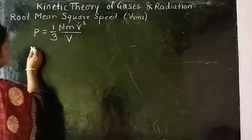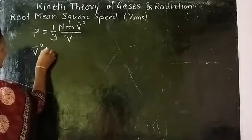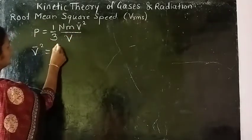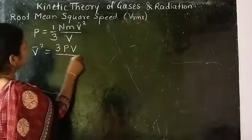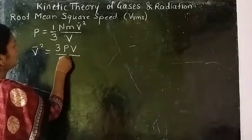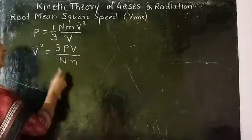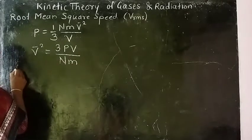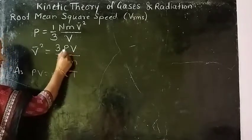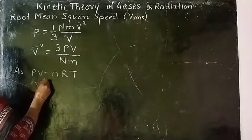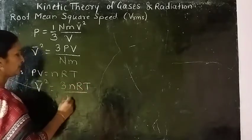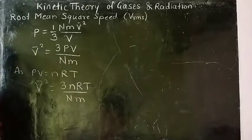Now I will write v² = 3PV divided by (n × m). This 3 and capital V come to this side, giving us v² = 3PV / (n × m). By using the ideal gas equation PV = nRT, I will substitute here. Therefore, v² = 3nRT divided by capital N into small m.